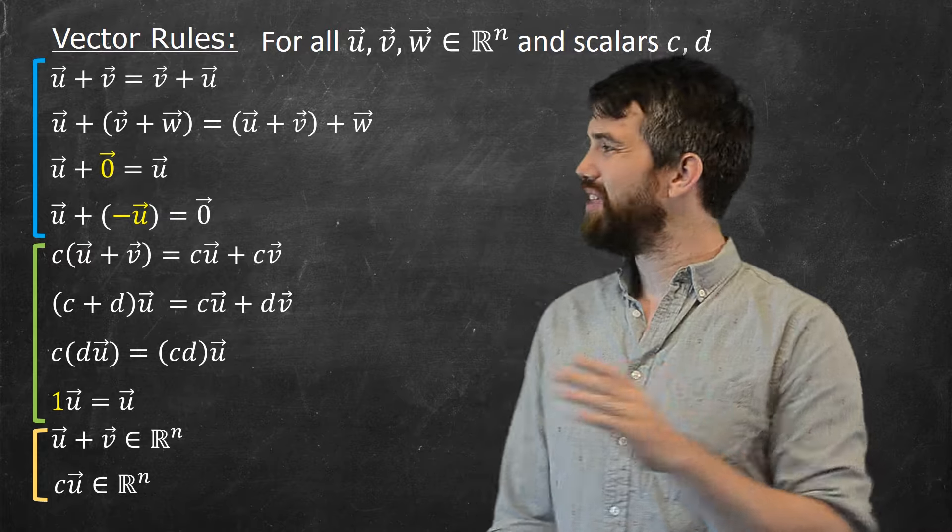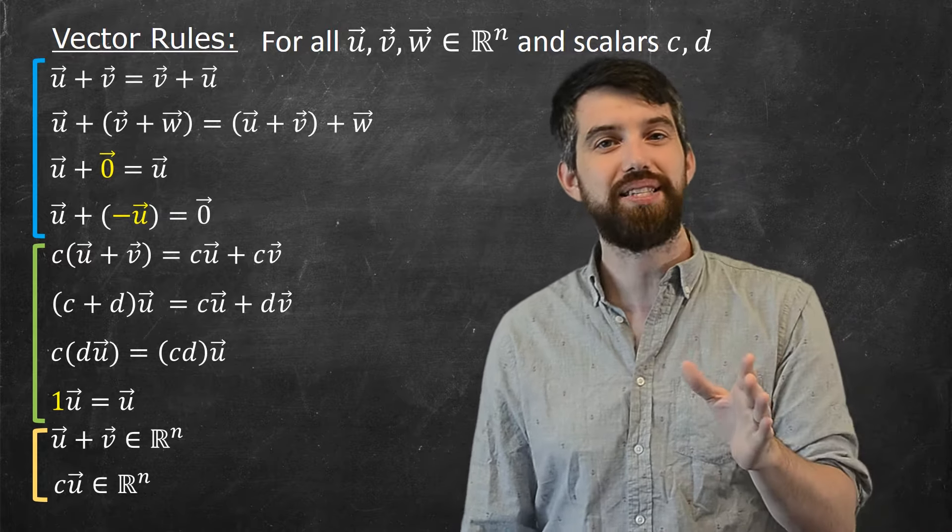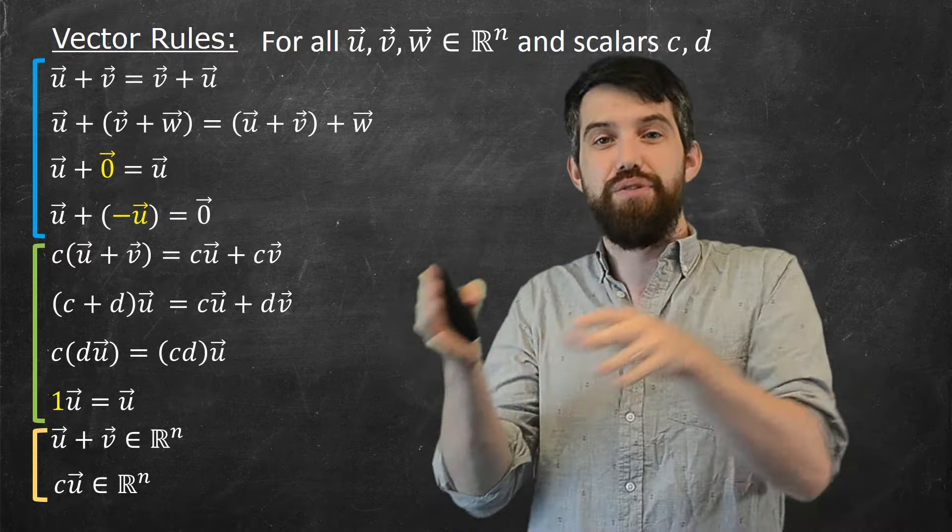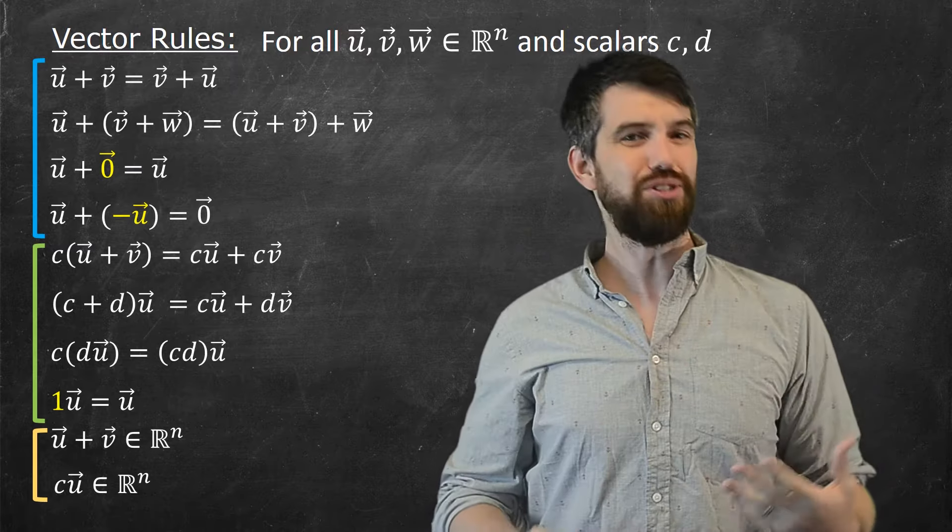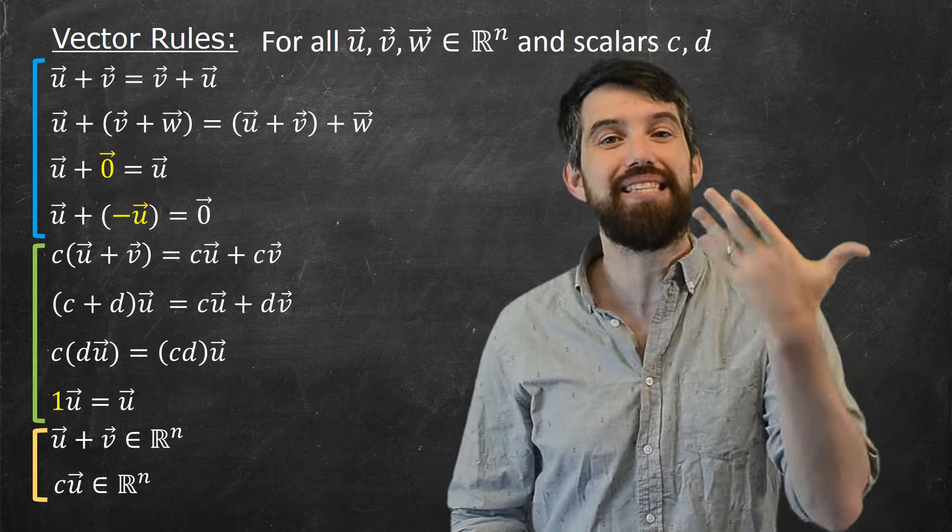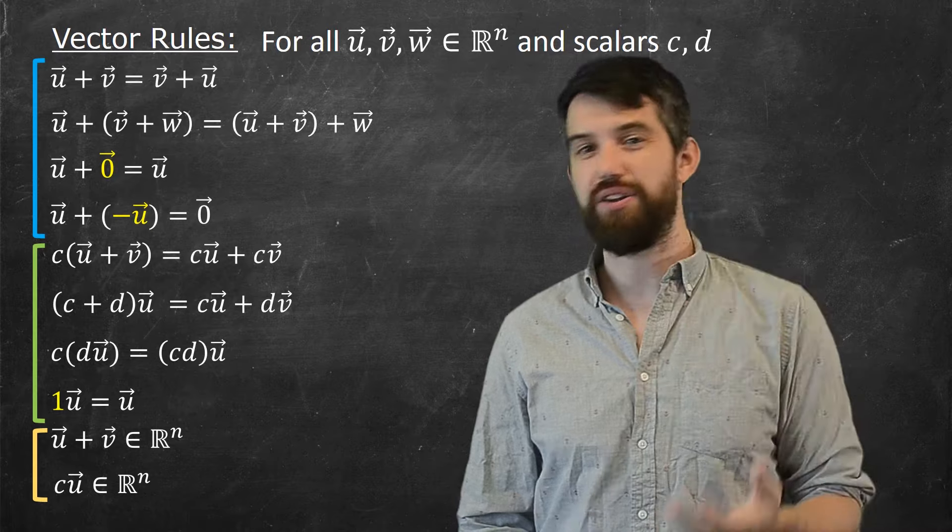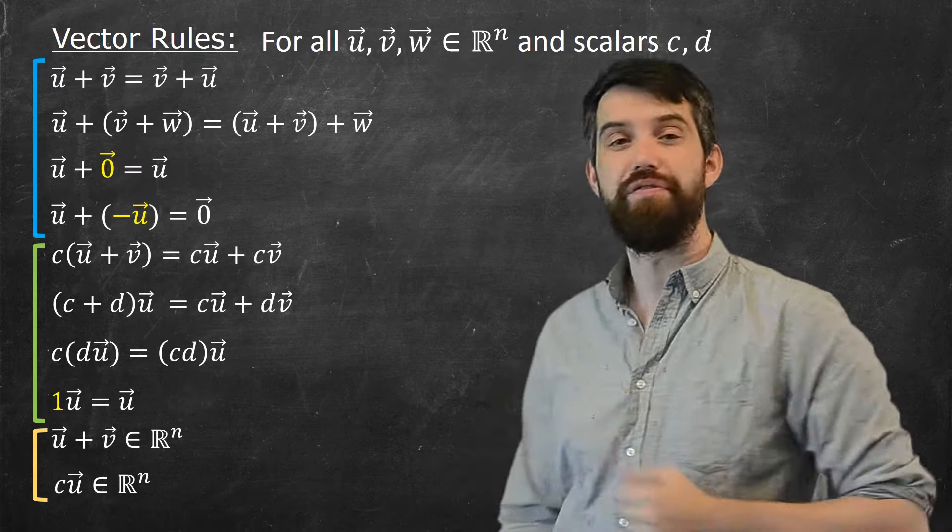By the way, the yellow ones, the zero vector, the one scalar, and for every vector the negative of that. This is sort of an existence claim, which says there exist these special vectors, like the zero vector and the one scalar, that are part of this list of rules.